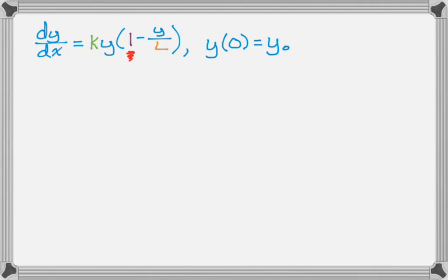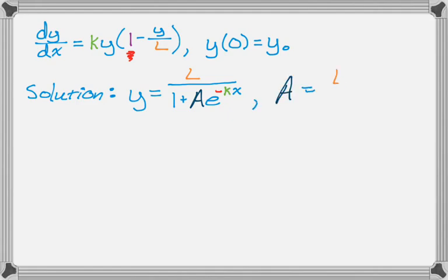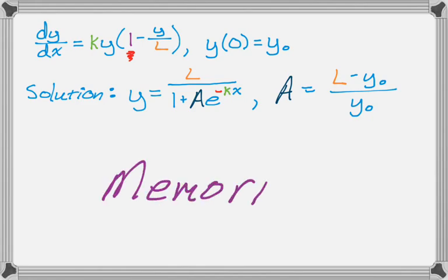So if you have the differential equation in this form, the solution is something that you're allowed to have memorized. You actually get the solution by doing partial fractions and some clever substitution stuff, but it looks like this: y equals L over 1 plus Ae to the negative kx. So that negative sign is there, and then there's A. What's A? A is actually going to be L minus y0 over y0. What I want you to do right now and forever is to memorize these things. So if you have them memorized, you're allowed to just use them.